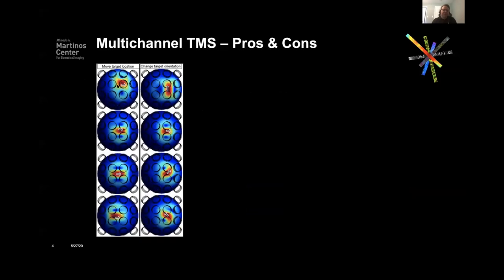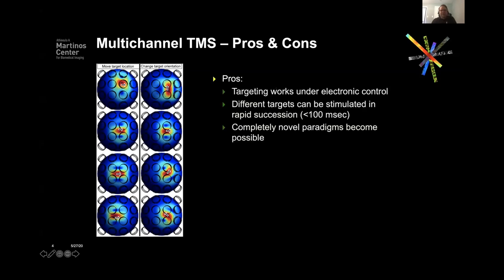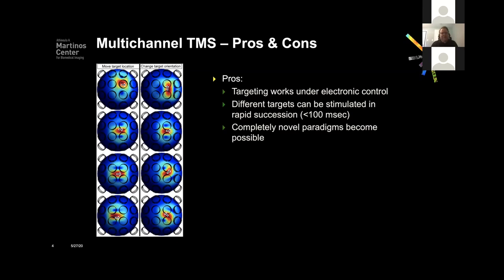The multi-channel system tries to do that differently. Instead of using one or two coils moving around, you build an array of coils and adjust the currents to synthesize an electric field hotspot by combining fields from multiple coils into the desired location. If you're able to do this, you can quite rapidly shift both the target location and orientation of the electric field. The pros are that it works under electronic control, so it's relatively quick to move the target, and it enables new types of TMS paradigms.